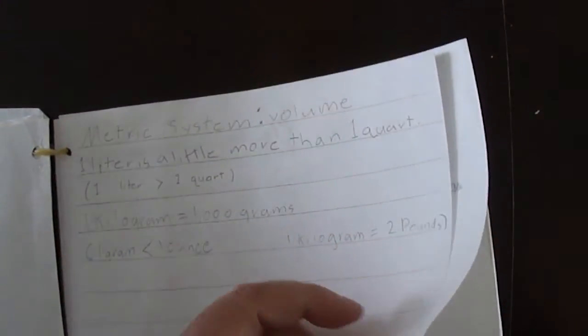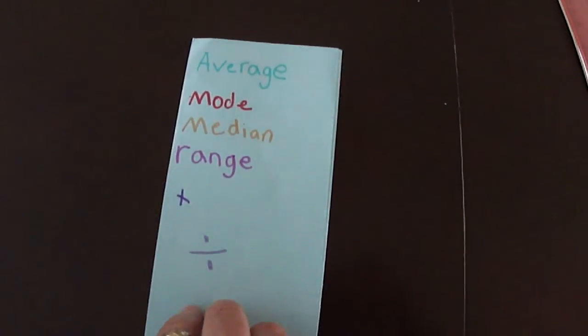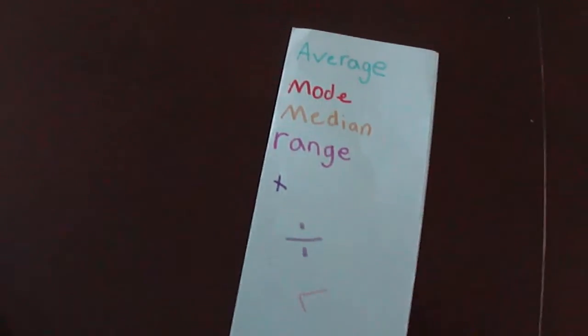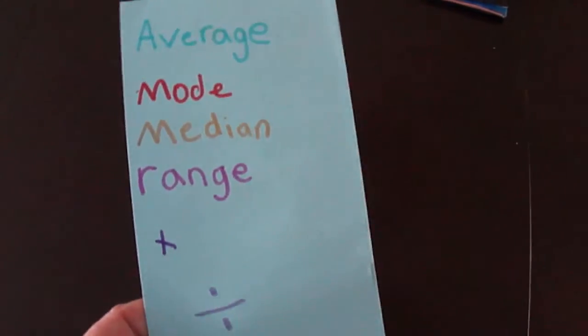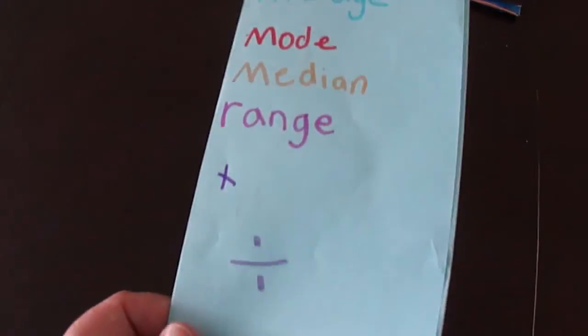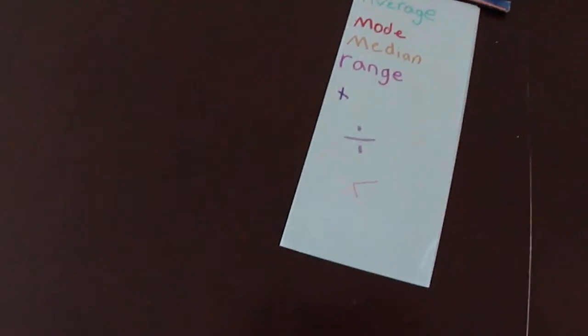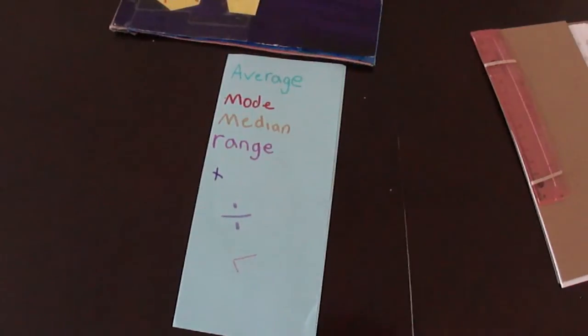This is something she made when she was six, but even at the age of 11 it comes in very handy to refer back to. Here is a little shutter fold for something she learned in fourth grade: average, mode, median, and range. Then somewhere she has a little layered lookbook with her multiplication problems that she made also when she was in first or second grade.